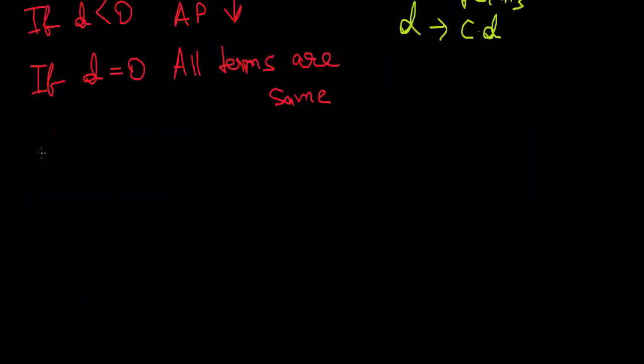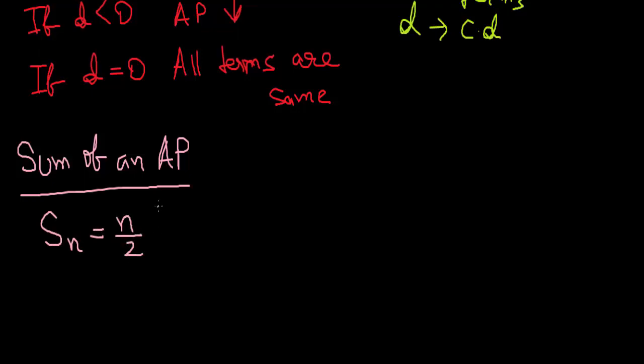We will see the formula for sum of an AP. The formula is given by S_N, the Nth term: (n/2) times [2a plus (n minus 1) times d]. This right here is the formula for sum. You must memorize this.